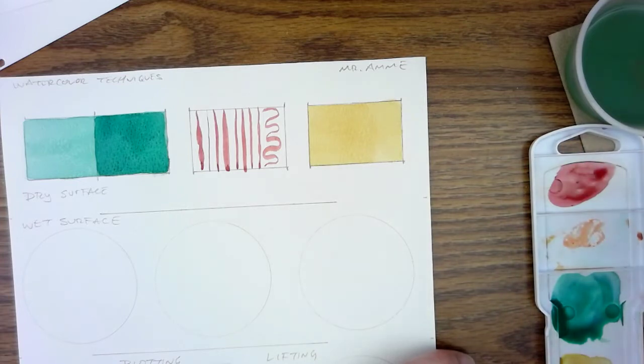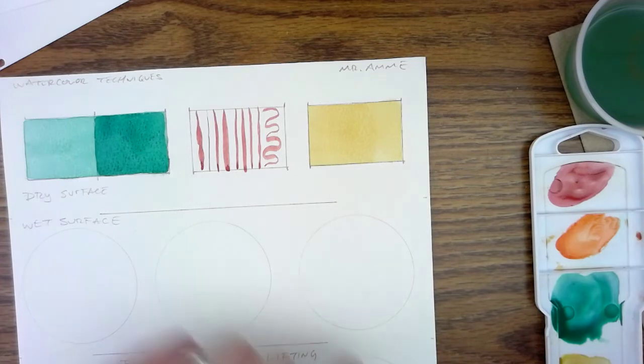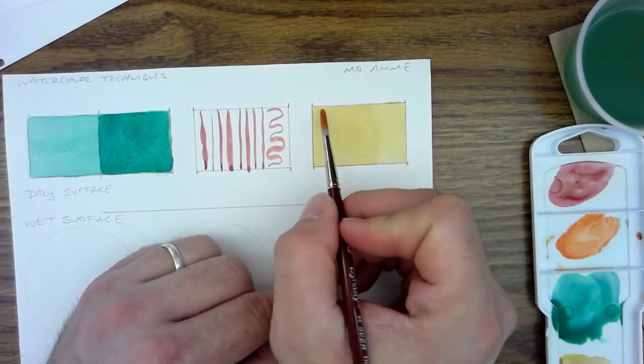And I'm going into the orange with a good amount of pigment. So I'm getting a good amount of orange on my brush. And I've got a little less water. It's not a full wash.